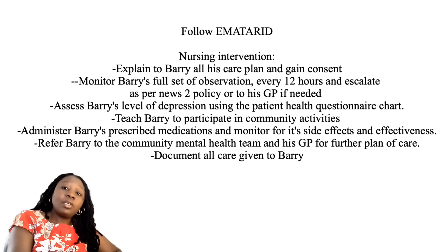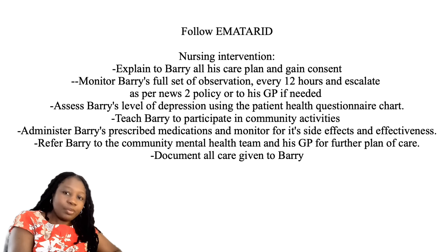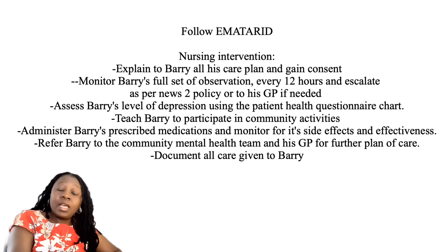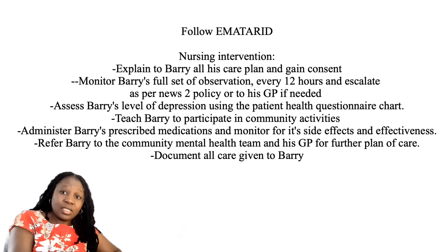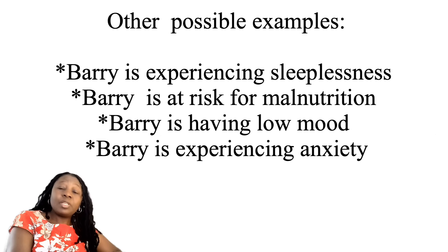T: teach Barry to participate in community activities to help with his mood. A: administer Barry's prescribed medication, monitor for side effects and effectiveness. R: refer Barry to the community mental health team and his GP. I: instruct Barry on the use of the call bell when he needs help, ensure Barry has his GP number, and ask him to call 111 for non-emergencies and 999 for emergencies. R: document all care given to Barry.